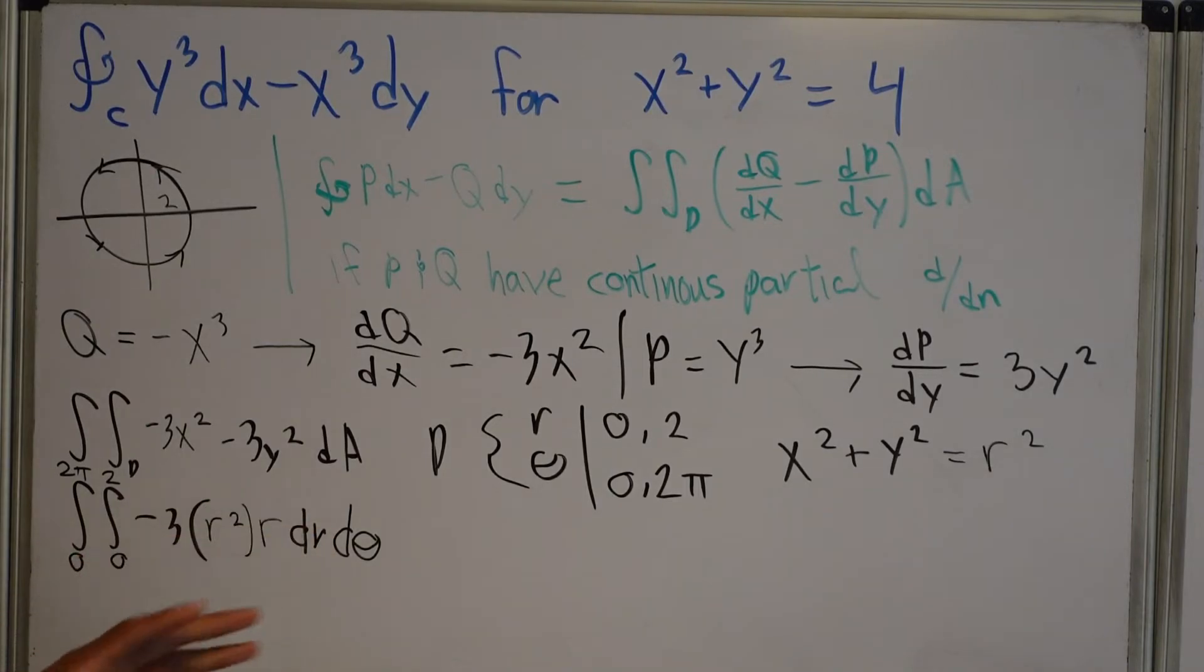Okay. So this is a lot easier to do now, right? This is a much easier integral to do. And let's do it. Okay. So this is equal to, okay, the negative 3.